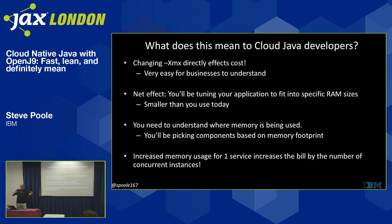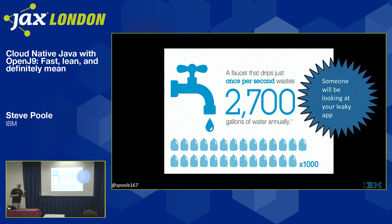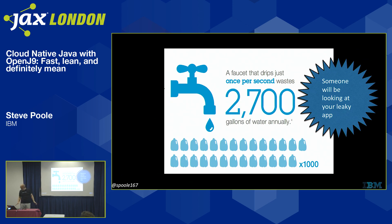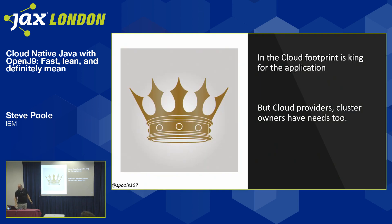Every time you increase the memory use of one microservice, you're paying that cost times the number of microservices. Once people start measuring you, they're going to start saying what can you do to be more economic? Little bits add up to big numbers. If people can find ways to shave a little bit of memory off one microservice, those little bits add up. In the cloud it's all about footprint.